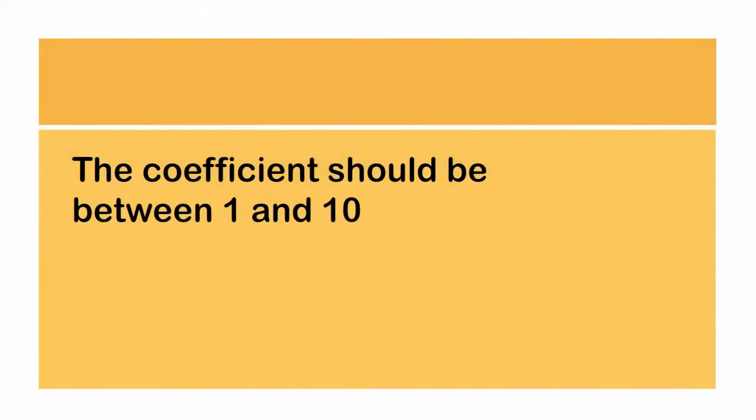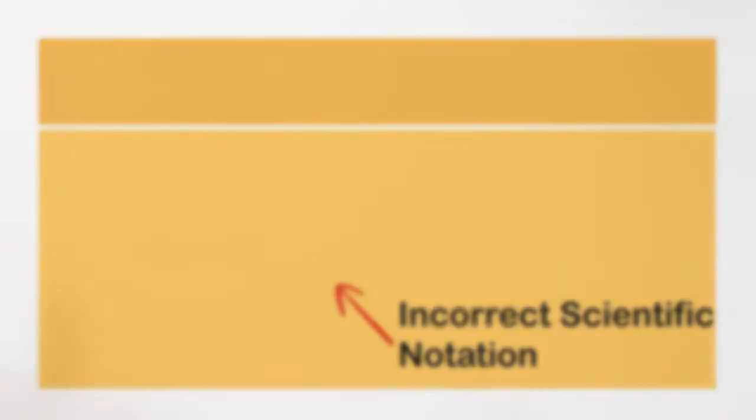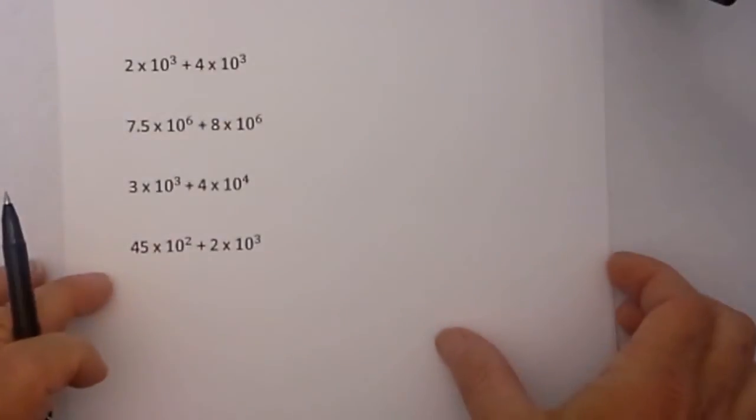And finally, remember, after adding, the coefficient should be between 1 and 10 to be in correct scientific notation. Okay, let's go ahead now and work some examples, keeping the rules we discussed earlier in mind.